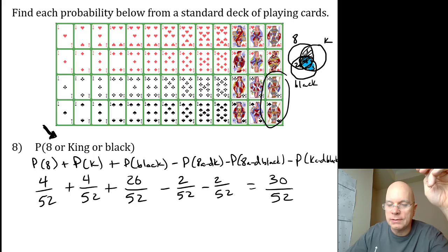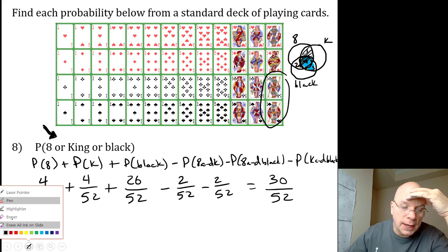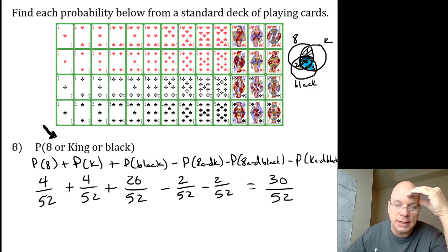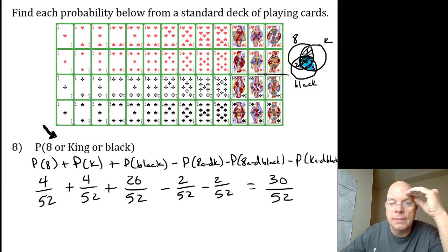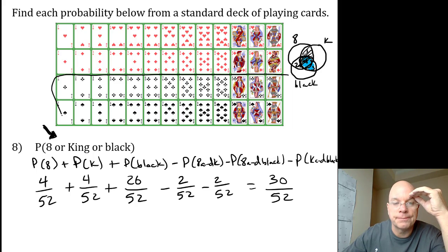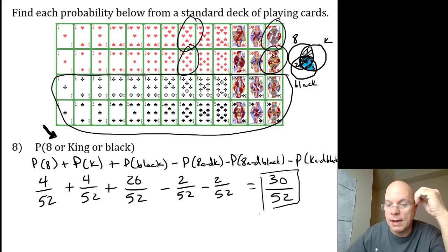Now, let me do it the hard way to make sure I really do have 30 favorable outcomes by counting the eights, the kings, and the black cards. We'll just start with the black cards. That's definitely 26. Now, I'm looking for any eights or kings that I haven't already counted. Four more, so 30 fifty-seconds is correct. And I know that simplifies to 15 twenty-sixths.